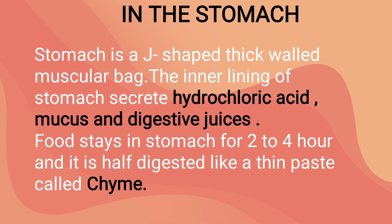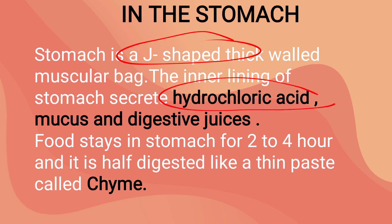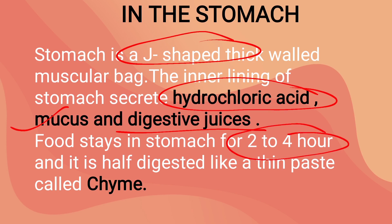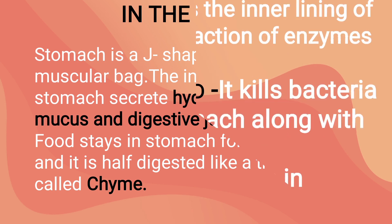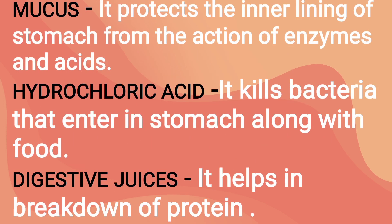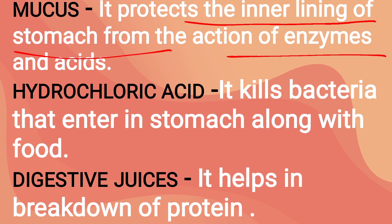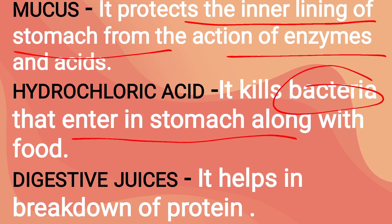In the stomach: after the esophagus, the food reaches the stomach. The stomach is J-shaped, thick-walled and muscular. The inner lining of the stomach secretes the following 3 juices: hydrochloric acid, mucus and digestive juices. Food stays in the stomach for around 2 to 4 hours and is half digested into a thin paste called chyme. Mucus protects the inner lining of the stomach from the action of enzymes and acids. Hydrochloric acid kills bacteria which enter with food, and digestive juices help in the breakdown of protein.